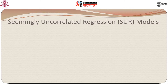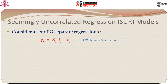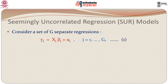The seemingly uncorrelated regression models are very commonly known as the SUR models. In this case, consider a set of g separate equations. We have y_j equal to x_j beta_j plus u_j, with j running from 1 to g. We call this equation 1.